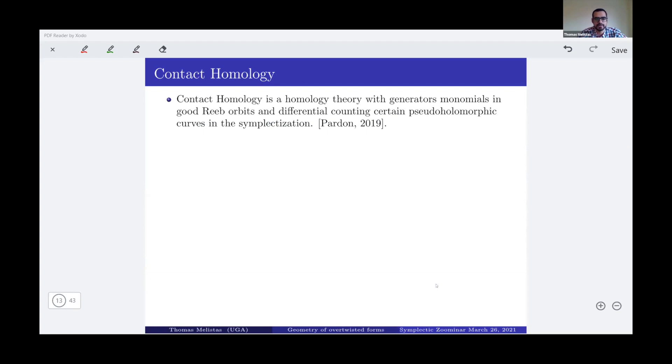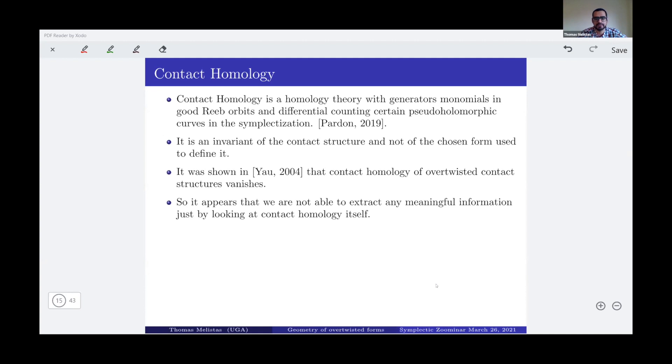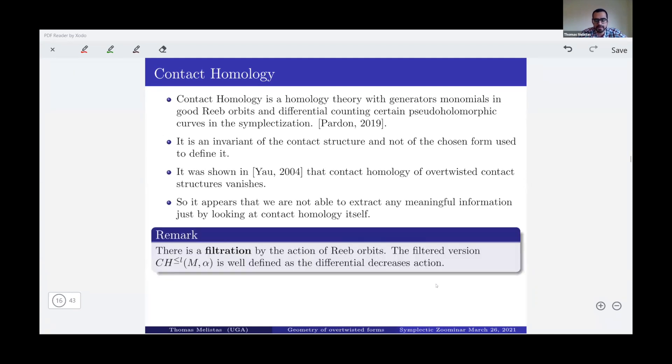Now, after having defined this distance, I'm going to talk about contact homology and why contact homology is a homology theory with generators, polynomials, and good orbits, and the differential counts certain pseudo-holomorphic spheres in the symplectization. That was rigorously defined by Eliashberg, Givental, and Hofer. The properties that we need is, first of all, this homology theory is an invariant of the contact structure and not of the chosen form used to define it. And the other thing is that it was shown by Mei-Lin Yau in 2004, although there is an appendix in that paper by Eliashberg, which suggests that the contact homology of over twisted contact structures vanishes. So that might not seem so good so far, because contact homology is an invariant of structure, not of the form. The second thing here is that it's always zero.